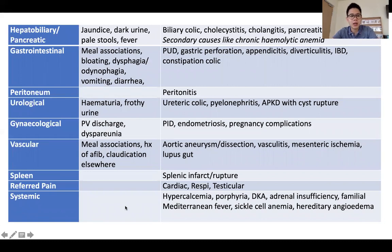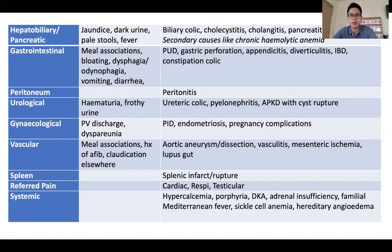The causes of abdominal pain are multisystemic. For the hepatobiliary system, important pieces of information in history would be jaundice, dark urine, and pale stools. When thinking of stone disease, it's important to consider secondary underlying etiologies such as chronic hemolytic anemia in our local context. For GI causes, peptic ulcer disease and other surgical causes are important, and secondary causes in the context of PUD — one might think of MEN syndrome with hypergastrinemia.